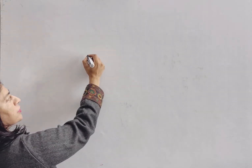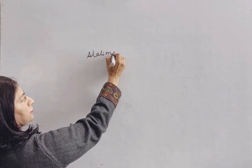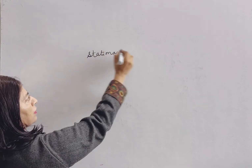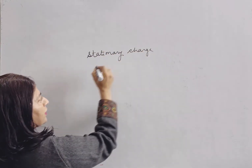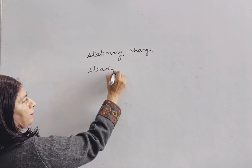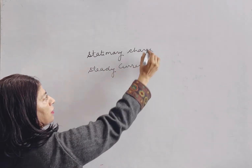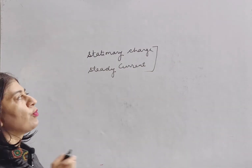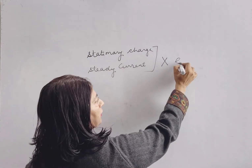Today we are going to talk about the topic of production of electromagnetic waves. As the name indicates, it consists of both electric as well as magnetic components. The question is, how is this going to be produced? If we take a stationary charge or a steady current, these two are never going to produce electromagnetic waves.